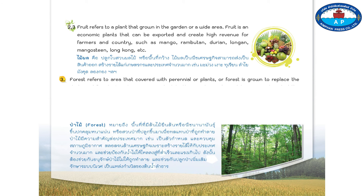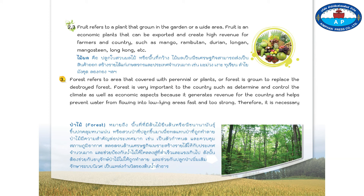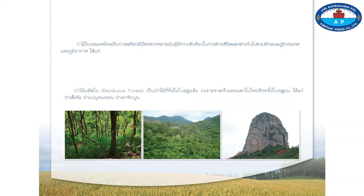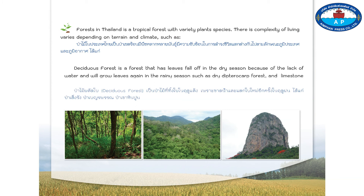Number three, forest refers to an area covered with perennial plants, or forest grown to replace destroyed forest. Forest is very important to the country as it determines and controls the climate as well as economic aspects, generating revenue and helping prevent water from flowing into low-lying areas too fast and strong. Therefore, it is necessary to protect forests from being destroyed and to plant more forests to preserve the ecosystem as a water source. Deciduous forest is a forest where leaves fall in the dry season due to lack of water and grow again in the rainy season, such as dry dipterocarp forest and limestone forest.